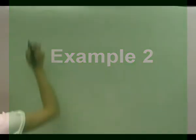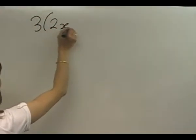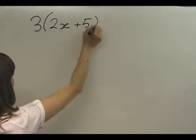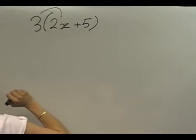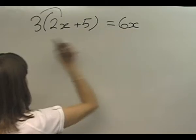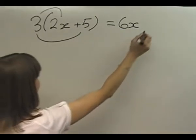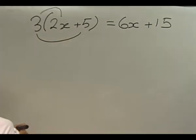Next example: 3 open bracket 2x add 5 close bracket. Again, we're doing 3 times everything inside the brackets. So 3 times 2x is 6x and 3 times 5 is 15. To recap, it's 3 times the whole of the brackets, so 3 times 2x plus 5 is 6x plus 15.